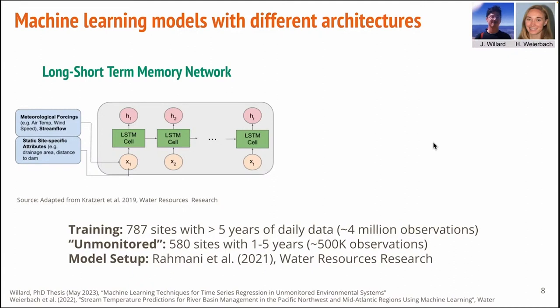The first model is a deep learning model called the Long Short-Term Memory Network, an LSTM, which is popular for time series predictions due to its ability to capture past system states. We used a model architecture developed by Kratzert et al. for streamflow predictions, adapted to take time series inputs such as climate forcings along with trait information. In our implementation, we used inputs of climate, streamflow, and 27 watershed traits selected as relevant for stream temperature predictions, with 787 sites having at least five years of data for training, and 580 sites for out-of-sample testing.